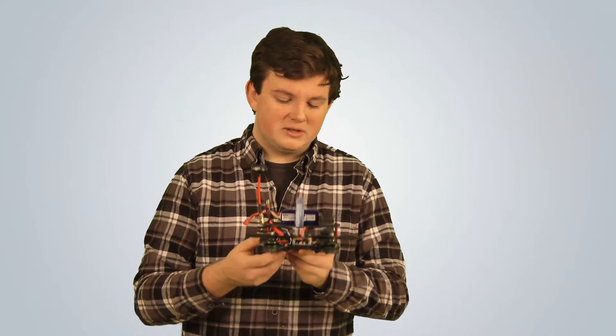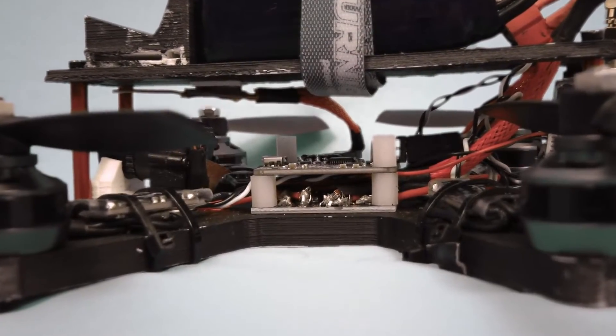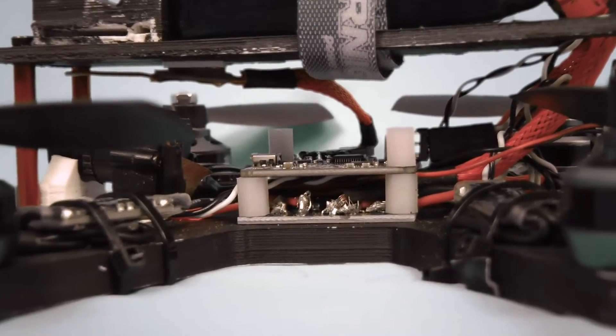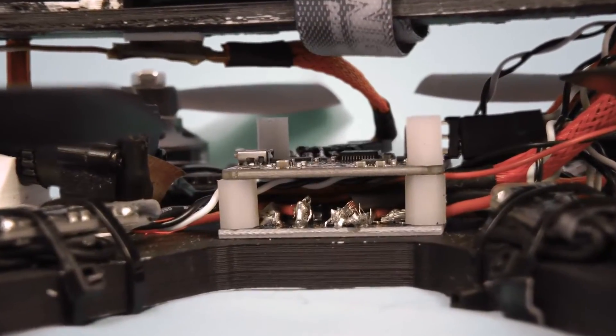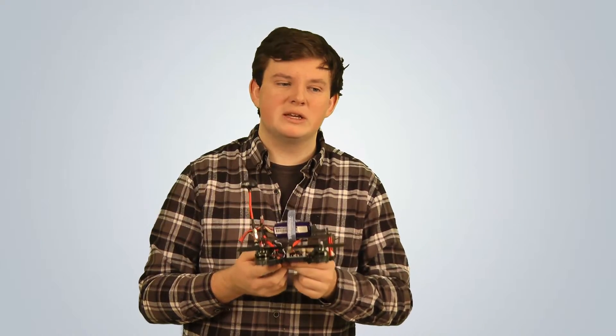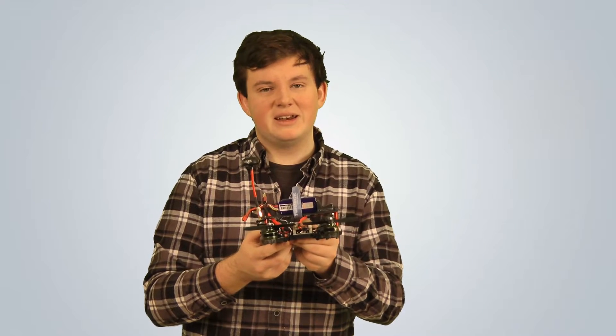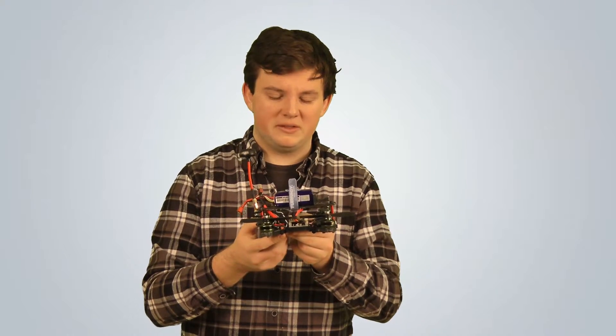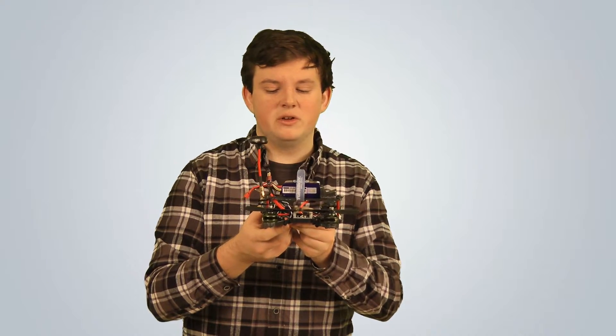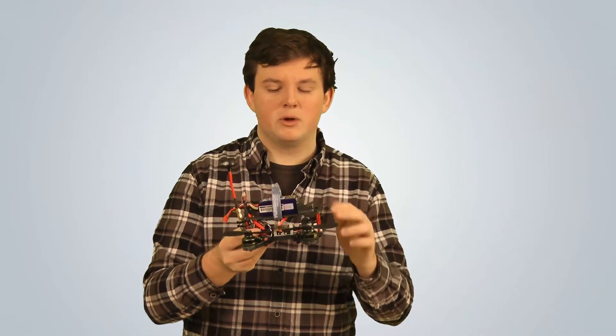Moving on to the stack of the flight controller and the power distribution, this is the Hobby King integrated BEC board with both 12-volt and 5-volt outputs. This is fantastic because these ESCs are opto ESCs, so they just go straight to the board, and the board plugs directly into my NAZE 32 board. And it also has a regulated 12-volt output for my video transmitter, which then gives 5 volts to my camera in the front.